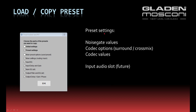The next part is the preset settings. The preset settings include the noise gate values, the codec options — for example, if you have activated a surround codec or a Gladen cross mix codec — and the codec values, meaning the slider positions of the Gladen codecs.